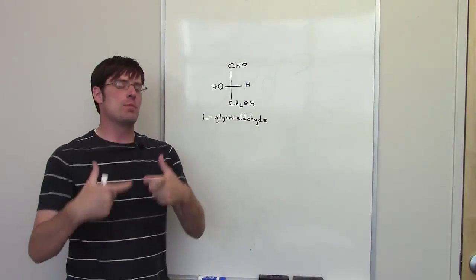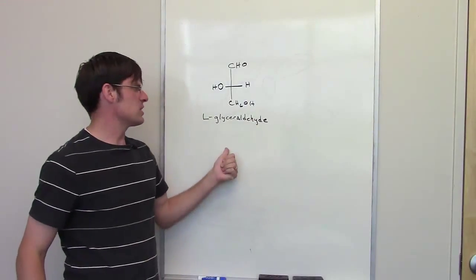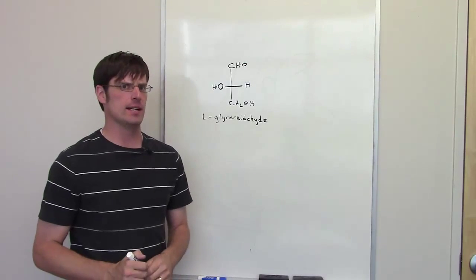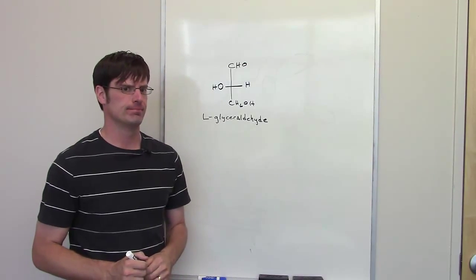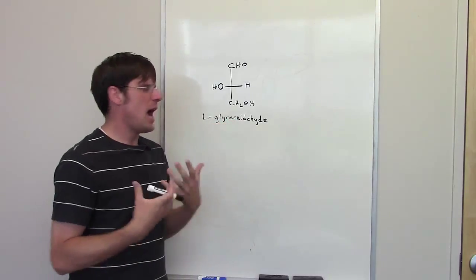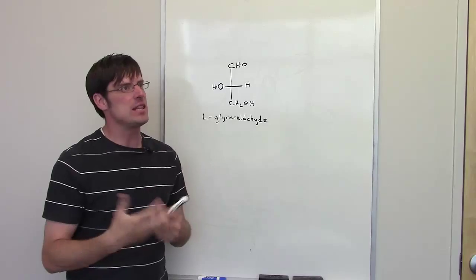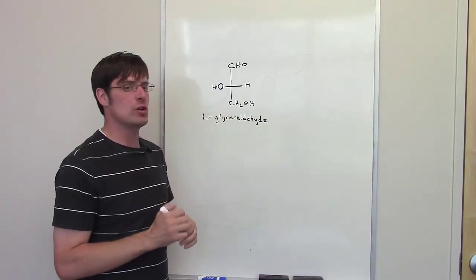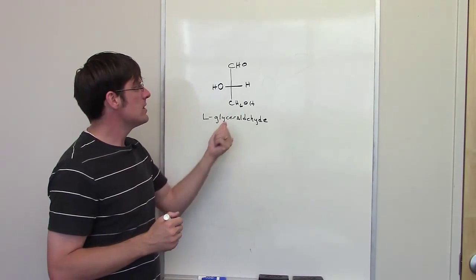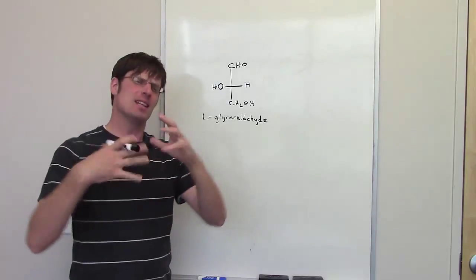In this question, we're asked to produce an IUPAC name for this molecule, L-glyceraldehyde. L-glyceraldehyde is a common name for this thing. How do we produce an IUPAC name for it? The best way I can think of is to convert it into a traditional sawtooth structure. This is a Fischer projection. Let me show you what I mean.